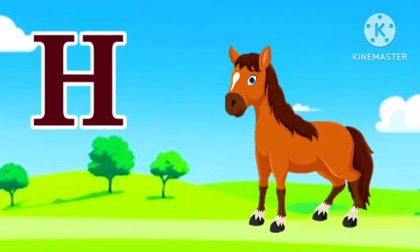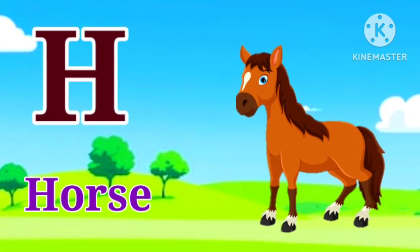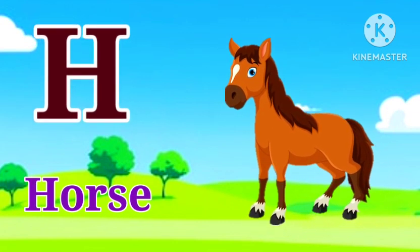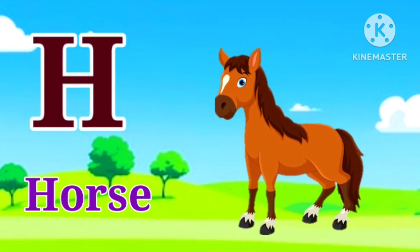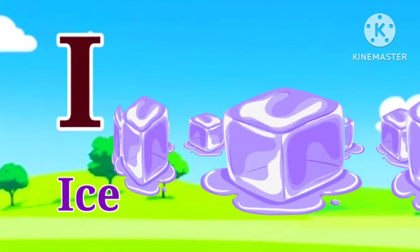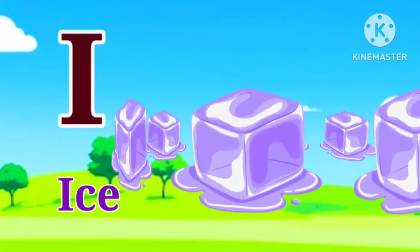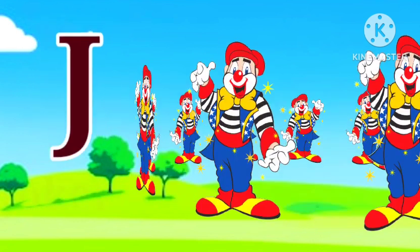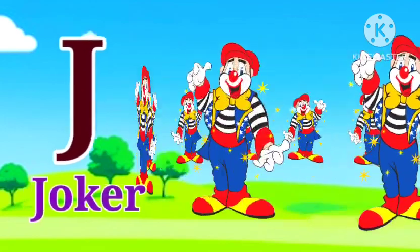G for goat, goat means bakdi. H for horse, horse means ghoda. I for ice, ice means bird.